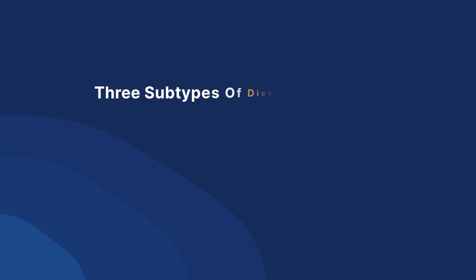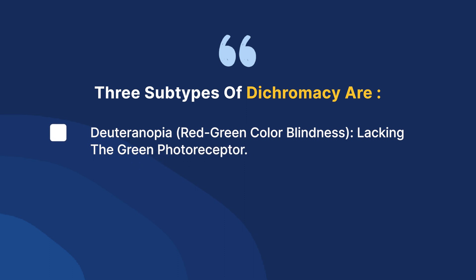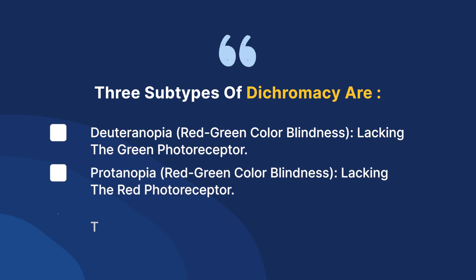as well as between yellow and red colors. In addition to these three main types, there is a more severe form known as dichromacy, where individuals lack one of the three types of color receptors completely. The three subtypes of dichromacy are deuteranopia, protanopia, and tritanopia.